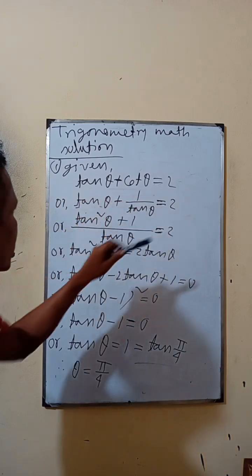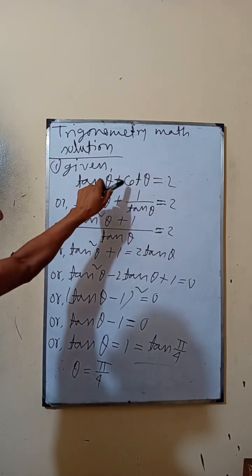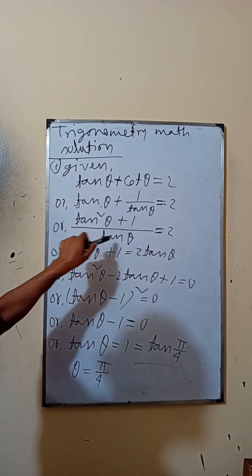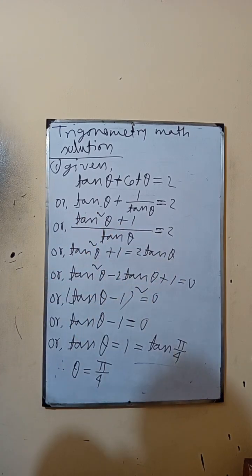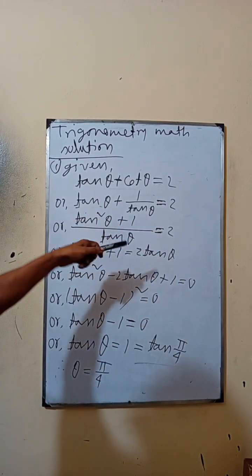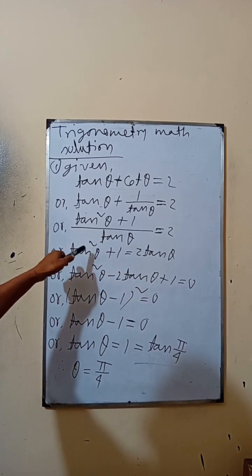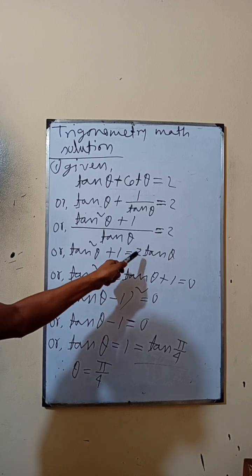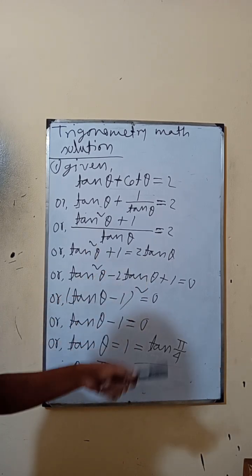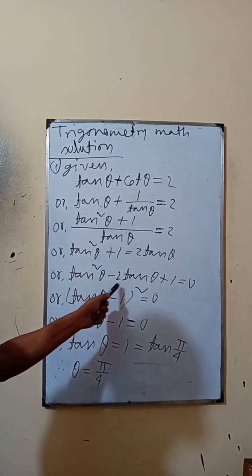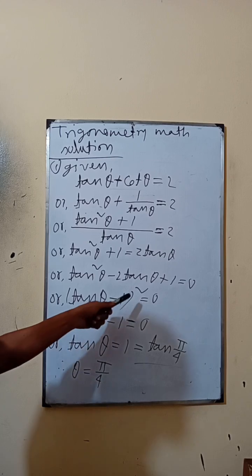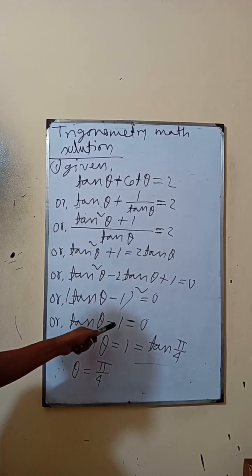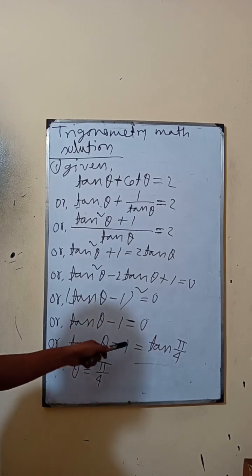10g1 is equal to 2. This is a fractional system, and 10g1 plus 1 is equal to 2 tan theta. 10g1 plus 1 is equal to 10g1 plus 1, and 1 minus 1 is equal to 1.